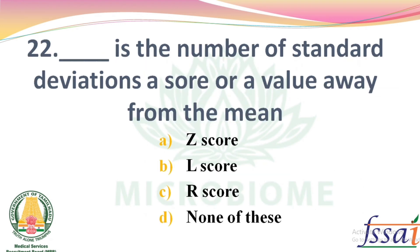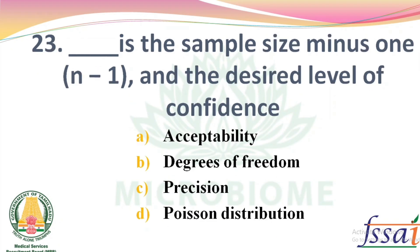Dash is the number of standard deviations a score or value is away from the mean. Options: Z-score, L-score, R-score, none of these. The right answer: Option A, Z-score.